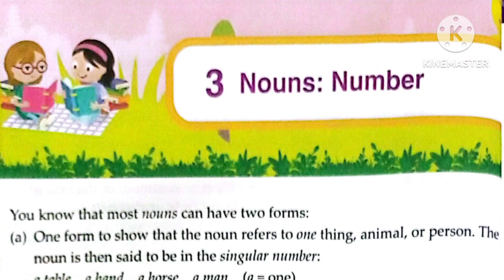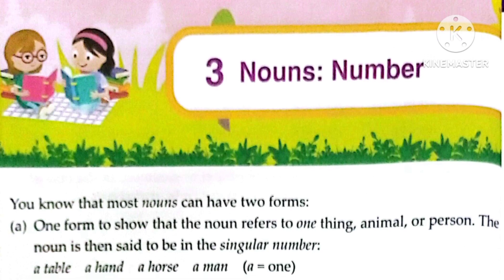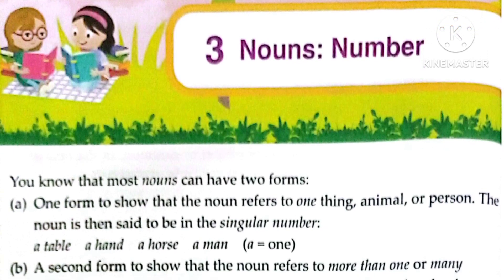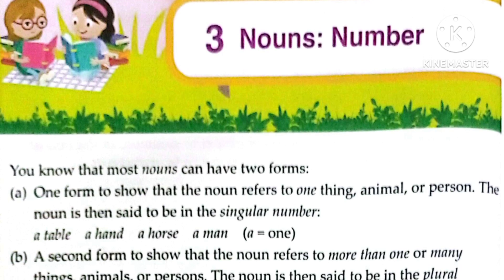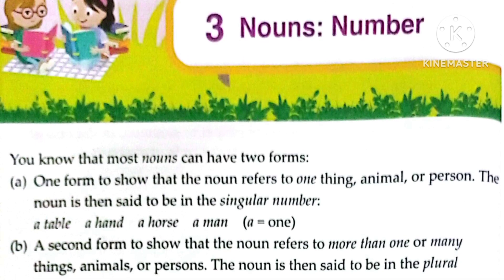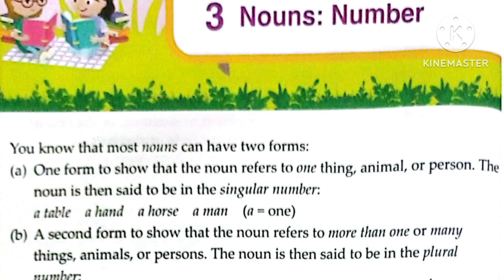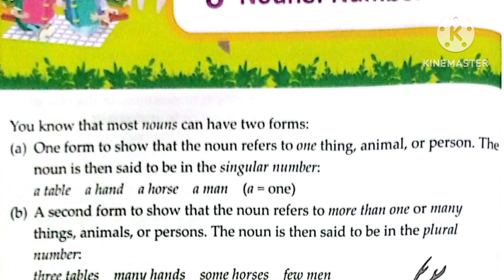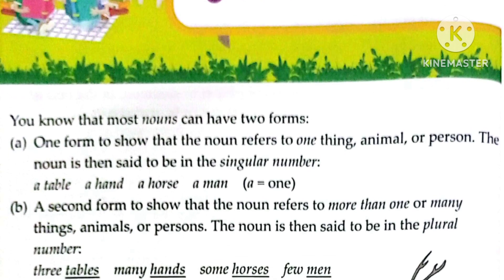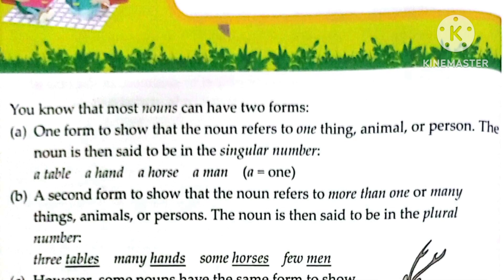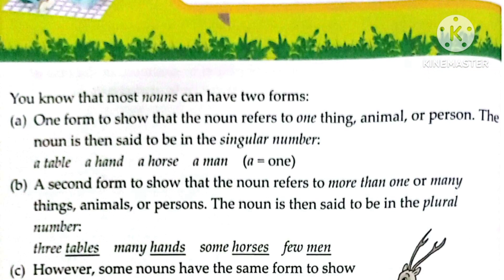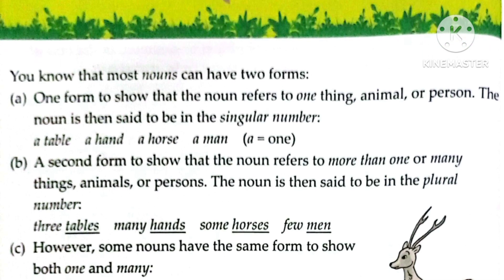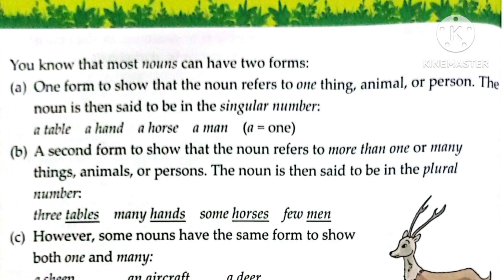You know that most nouns can have two forms. Many nouns can be found in two forms. The first form is to show that the noun refers to one thing — this is called the singular number.